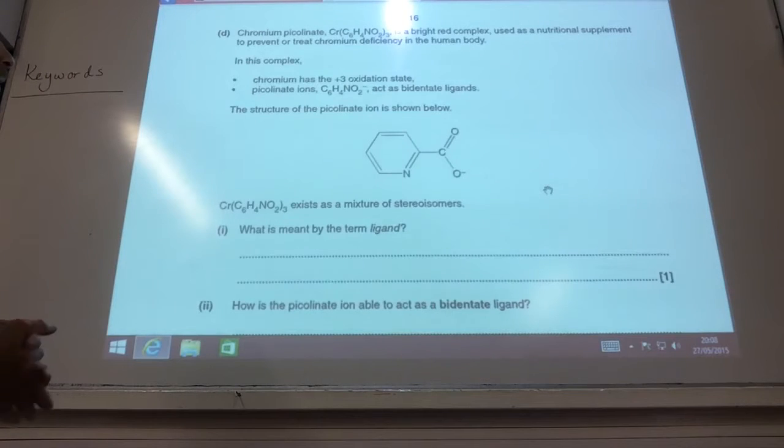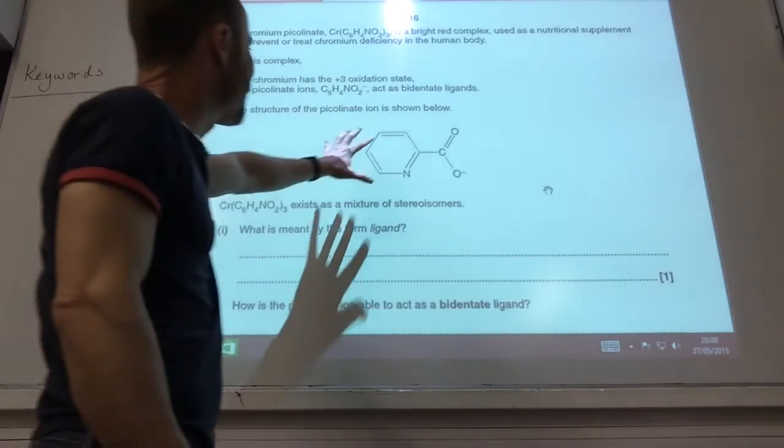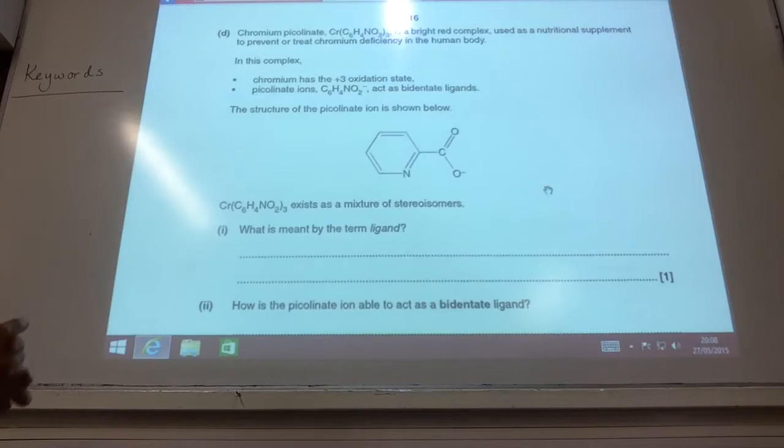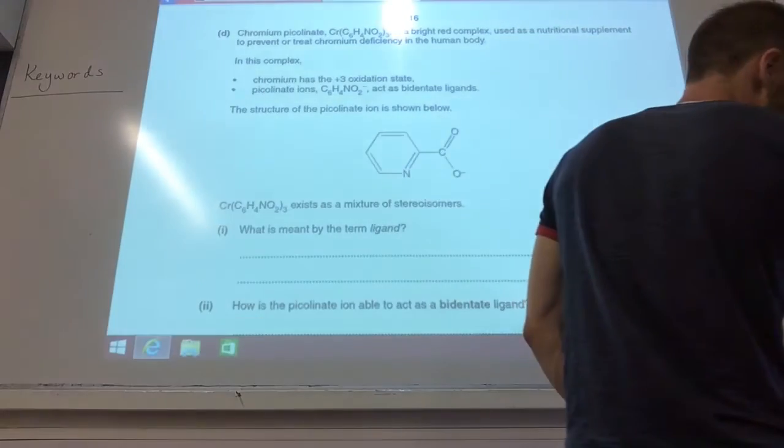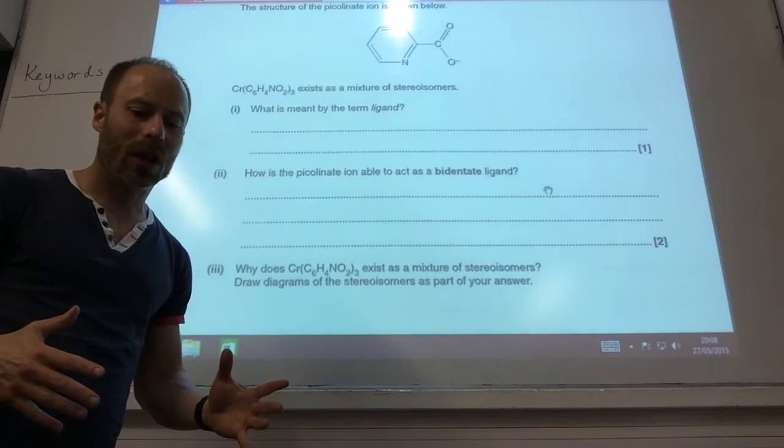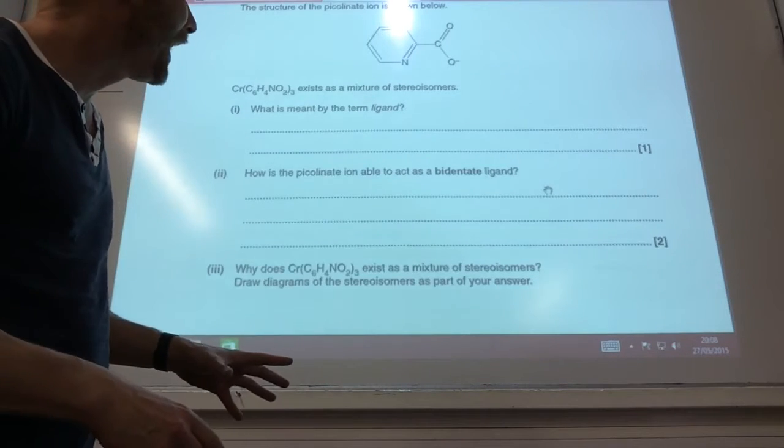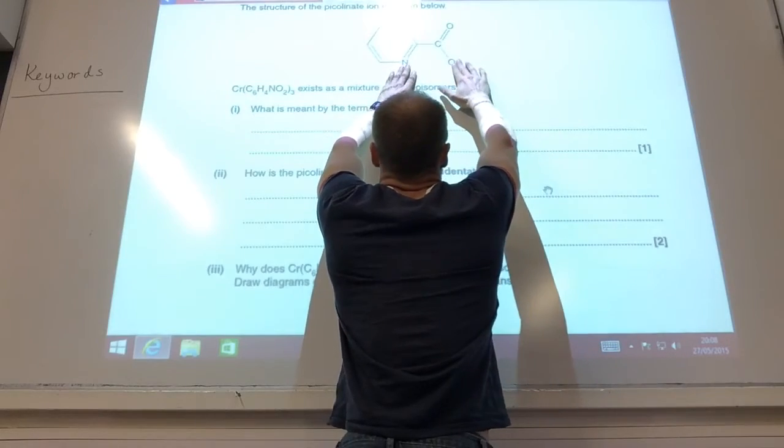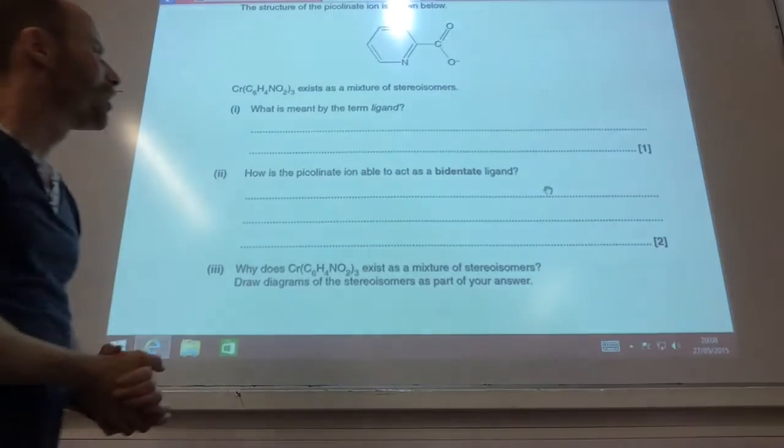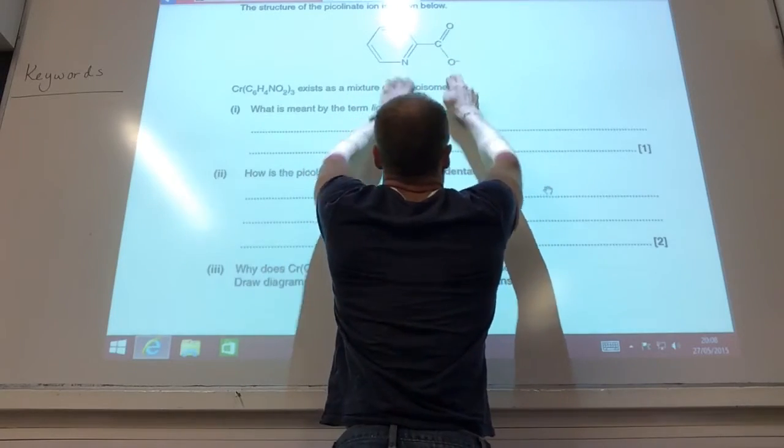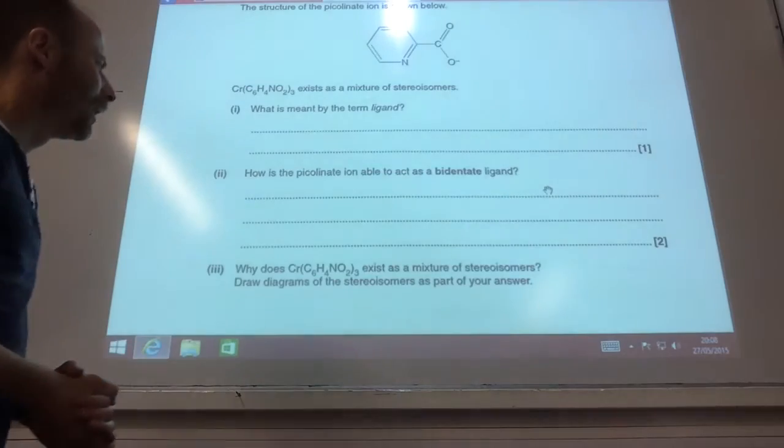Oh, right. We'll give you an interesting complex of chromium. Let me show you the structure of the ligand, and tell me that this acts as a bidentate ligand. Well, it's meant by the term ligand. It's something that can donate an electron pair to a metal ion. How is that able to act as a bidentate ligand? Well, it must donate two pairs of electrons to form two coordinate bonds from lone pairs on the oxygen atoms. Interestingly, it could actually donate from that nitrogen and that oxygen, or from those two oxygens.